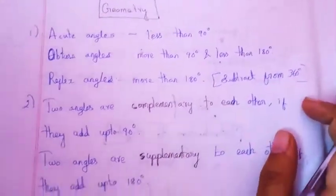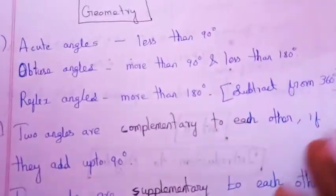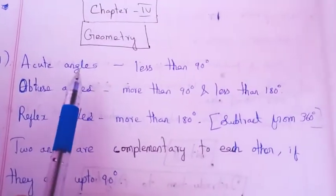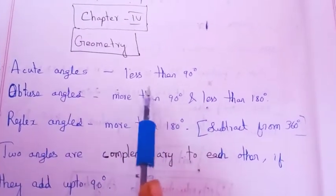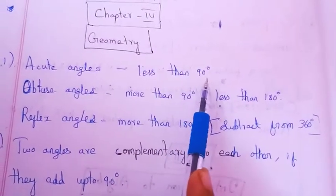Chapter 4 is Geometry. First, you can see the acute angles. Acute angles are less than 90 degrees.